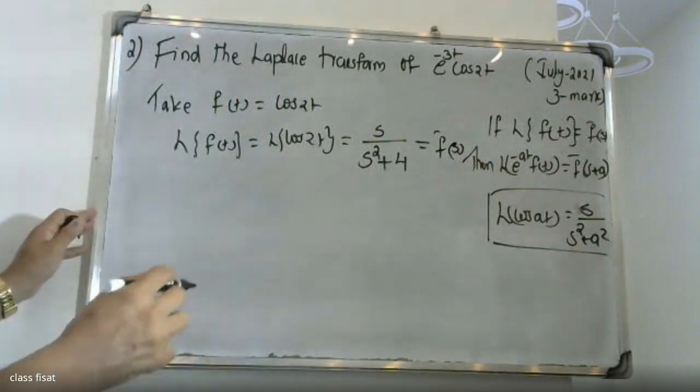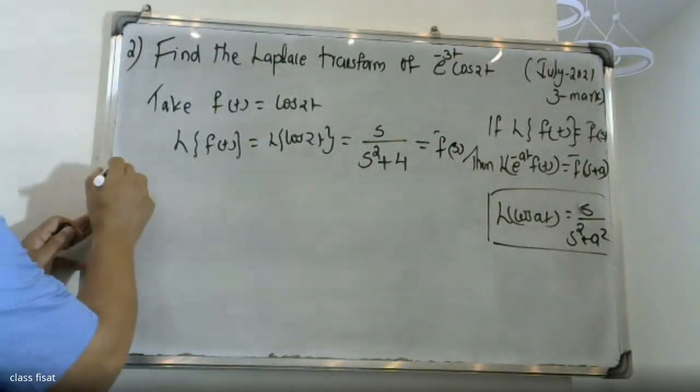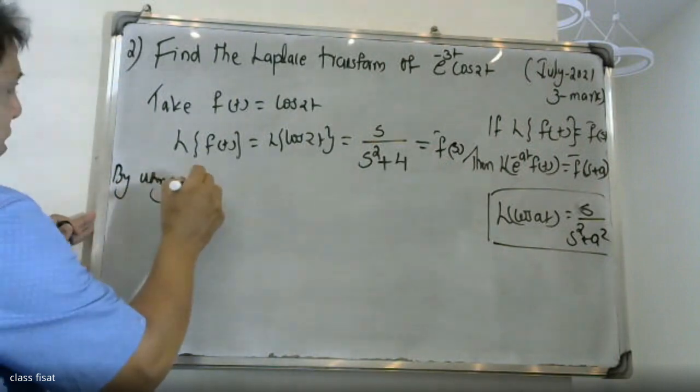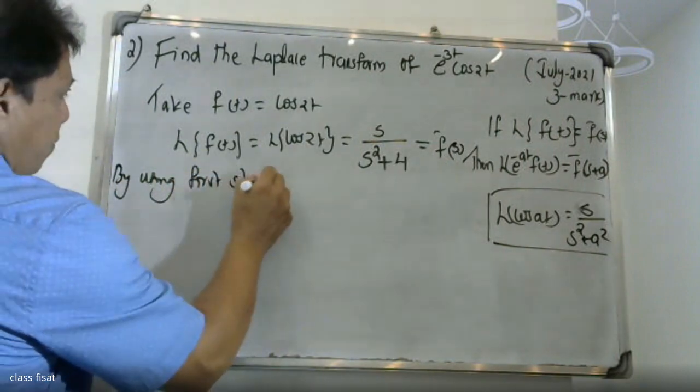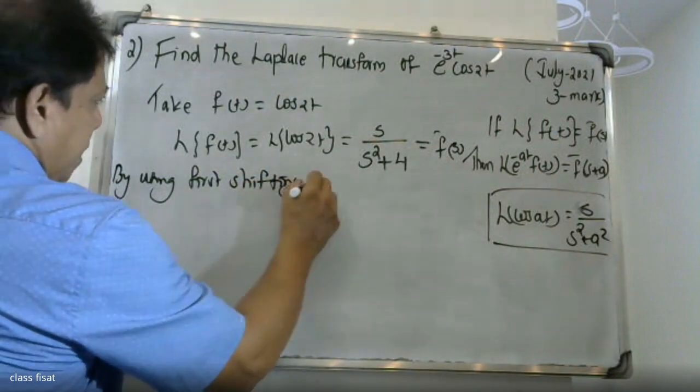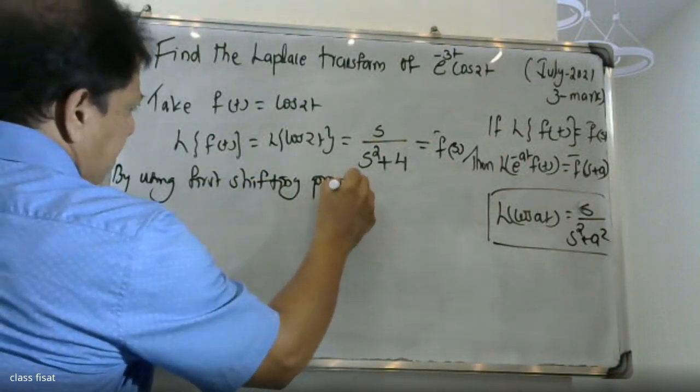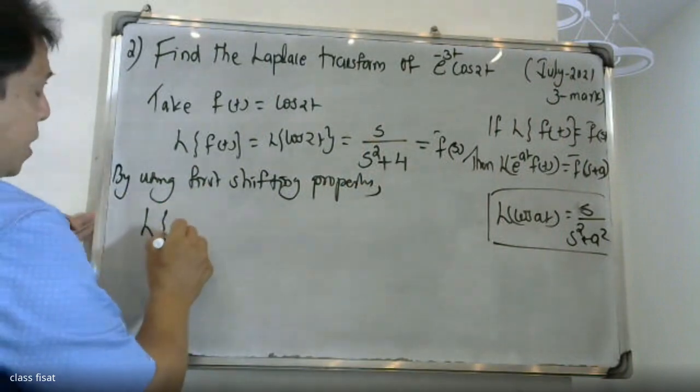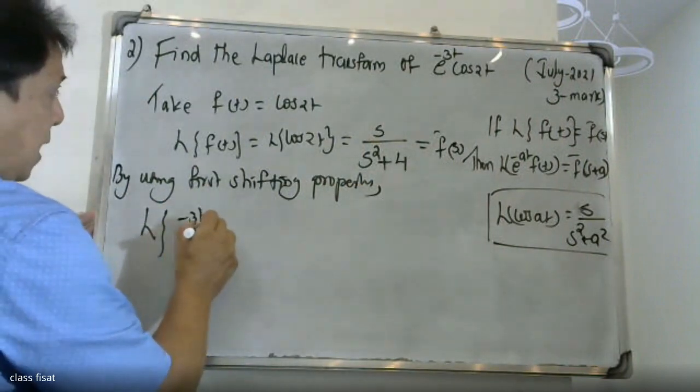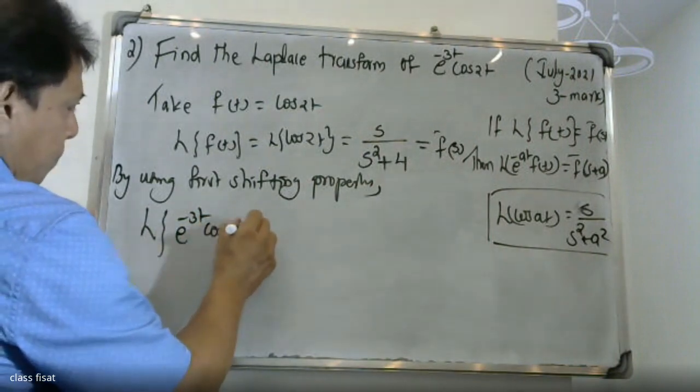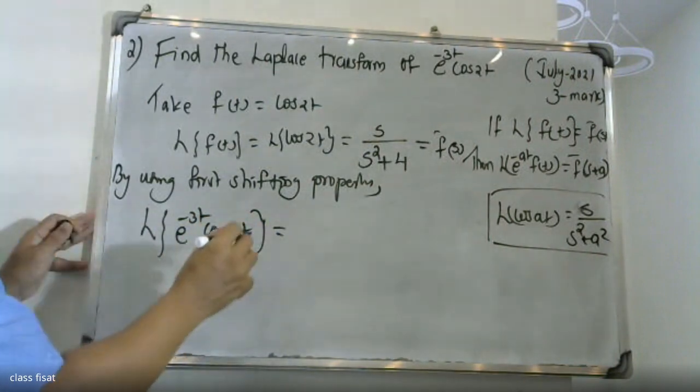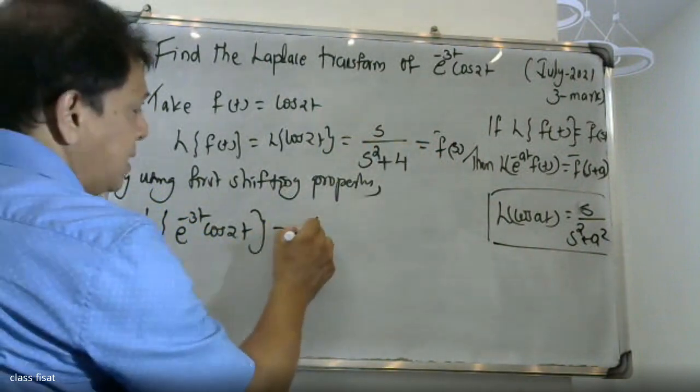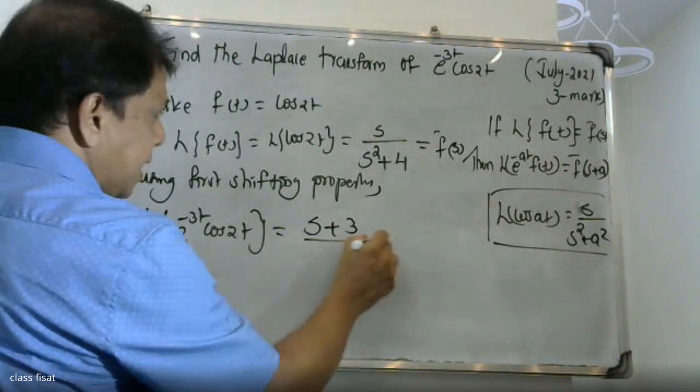Now we can apply the first shifting property. Using the first shifting property, Laplace transform of e raised to minus 3t cos 2t equals - since we have f bar as our function, in the replacement, s is replaced by s plus 3.